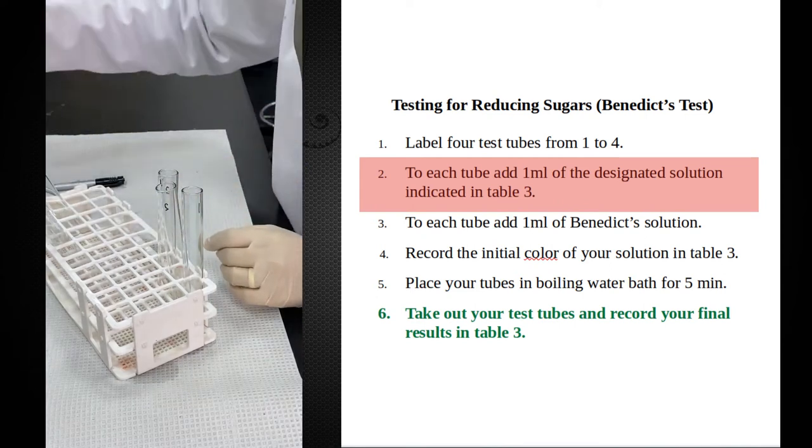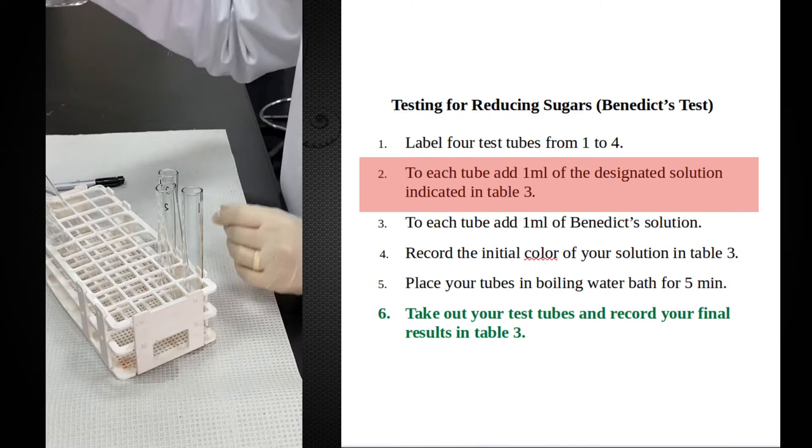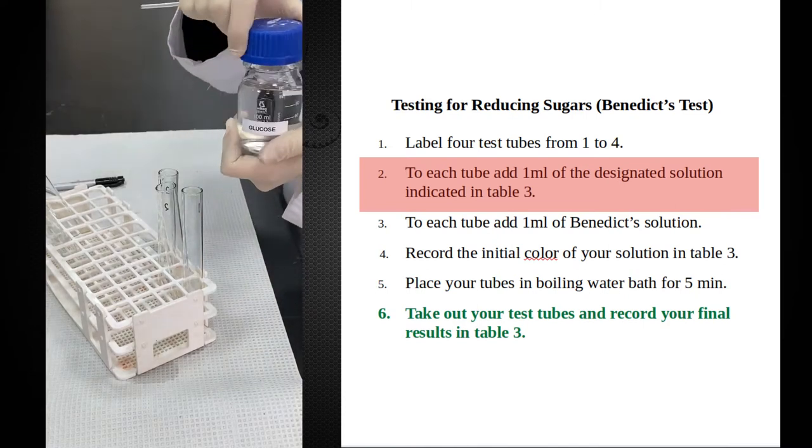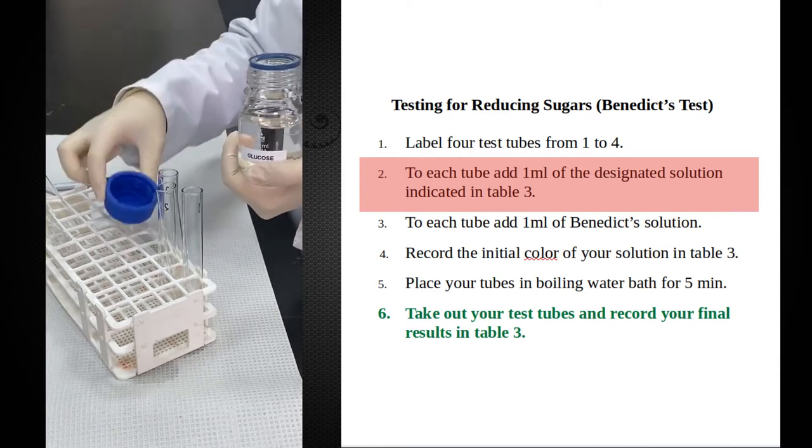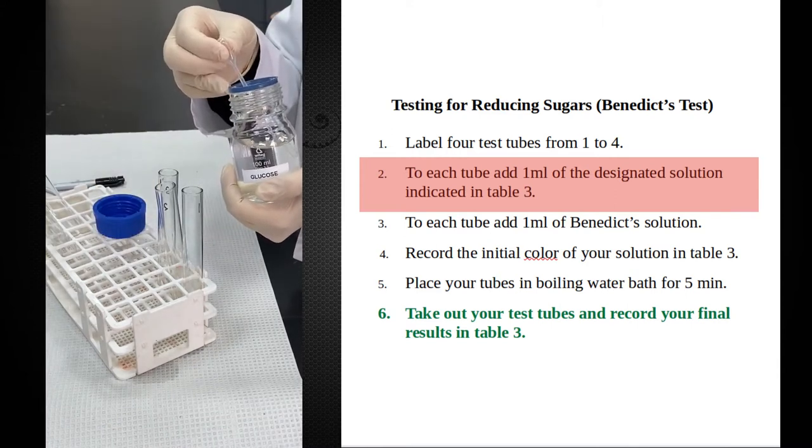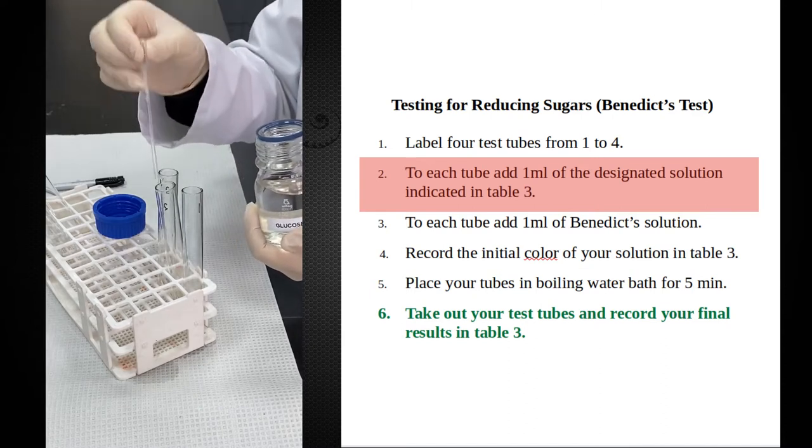The second test tube is going to be a positive control. As you know, all monosaccharides are reducing sugars, and for a positive control purpose I will use glucose, which is a monosaccharide and therefore a reducing sugar. One ml of glucose.